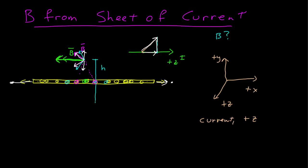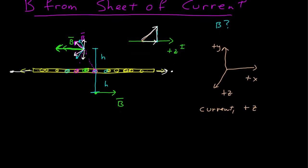What about below the sheet of current? Using the right-hand rule again, we find that below the sheet the magnetic field points along the positive x-axis, and all the y-contributions still subtract out because of the same symmetry. So at some fixed height h above the sheet the field points in the negative x direction, and below the sheet it points in the positive x direction. Now we want to calculate this field, and given this high degree of symmetry, we'll use Ampere's Law.